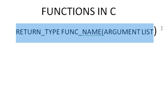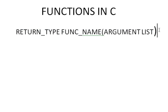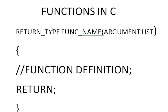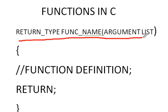This is the syntax for defining a function. The first line is called the function header, and the body below it is the function body. Here we have the return type, and inside the body we can define anything the function needs to do.